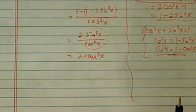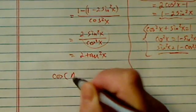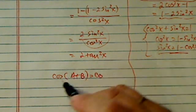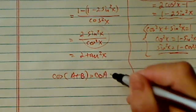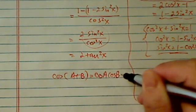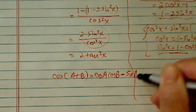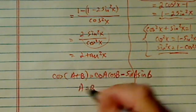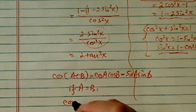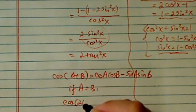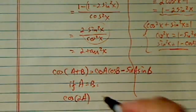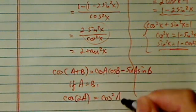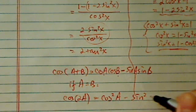Now another common thing that I ask my students to remember is this. Cosine a plus b is cosine a cosine b minus sine a sine b. So obviously if you have a equal to b, then you have cosine of 2a, which is double angle, is equal to cosine a cosine a, that's cosine squared a minus sine squared a.